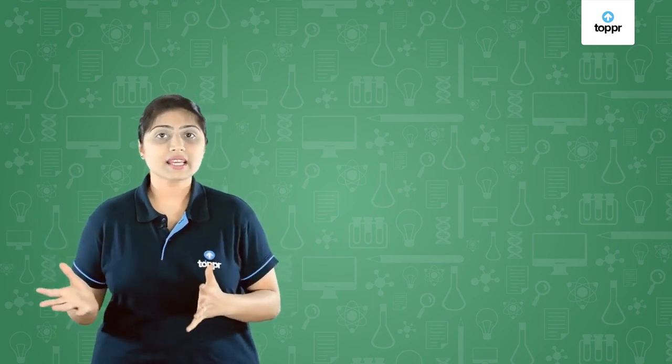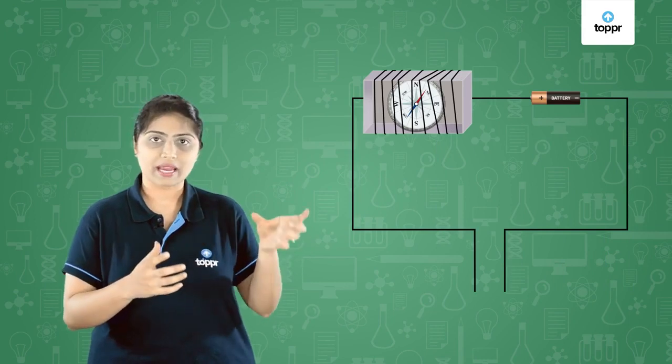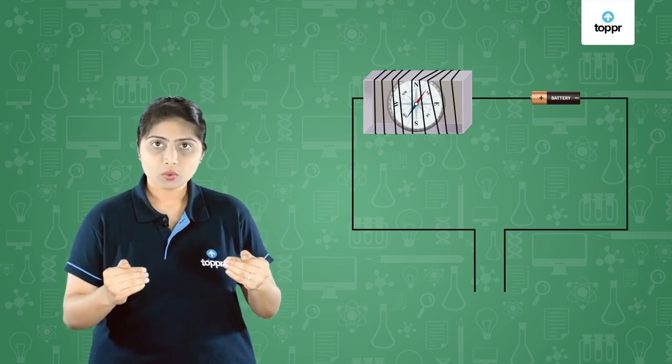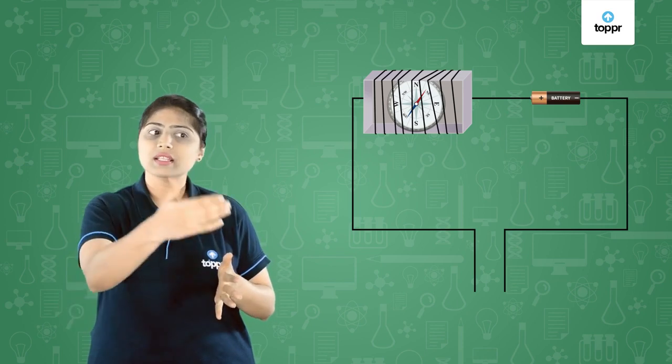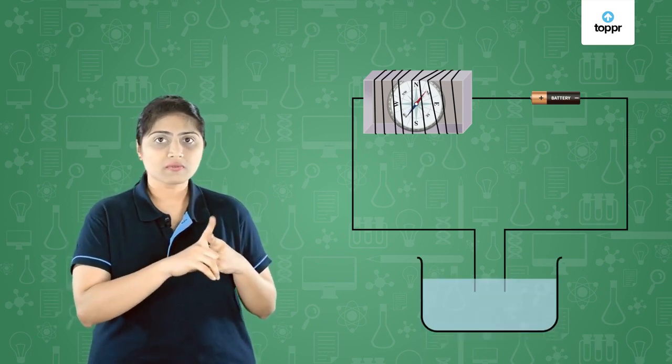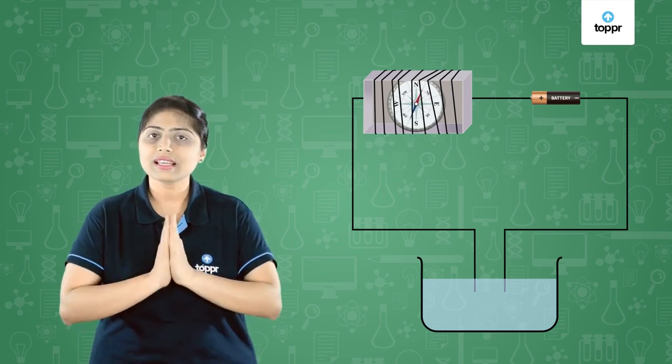Electricity. We know that certain substances conduct electricity. In this tester we have a battery which is connected to a magnetic needle, and there are two wires in the circuit which are left open from their ends. If we have to test a substance whether it conducts electricity or not, we can place it between the two ends of the wire. If the magnetic needle shows deflection, that means that substance conducts electricity.